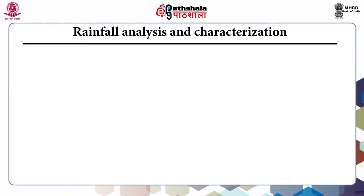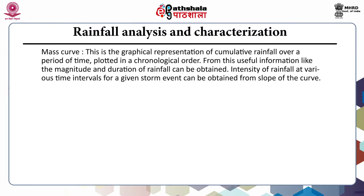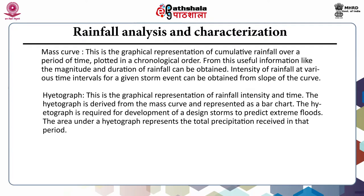For rainfall analysis and characterization, the first one is the mass curve. This is the graphical representation of cumulative rainfall over a period of time, plotted in a chronological order. From this, useful information like magnitude and duration of rainfall can be obtained. The intensity of rainfall at various time intervals for a given storm event can be obtained from the slope of the curve. The hyetograph is the graphical representation of rainfall intensity and time, derived from the mass curve and represented as a bar chart. The hyetograph is required for the development of a design storm to predict extreme floods. The area under a hyetograph represents the total precipitation received in that period.